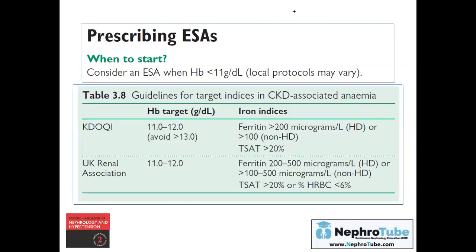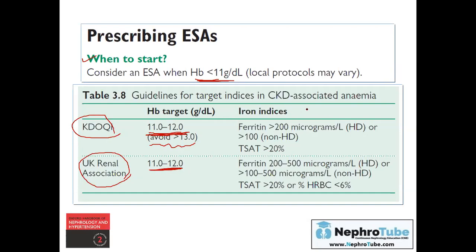According to Oxford's Handbook of Nephrology and Hypertension, consider ESA therapy when hemoglobin is below 11. The KDIGO guidelines target hemoglobin from 11 to 12, avoiding levels above 13. The UK Renal Association guideline also targets between 11 and 12. KDIGO also advises caution before initiating ESA in patients with a history of active malignancy or history of active stroke, as ESA therapy may be hazardous in these patients.